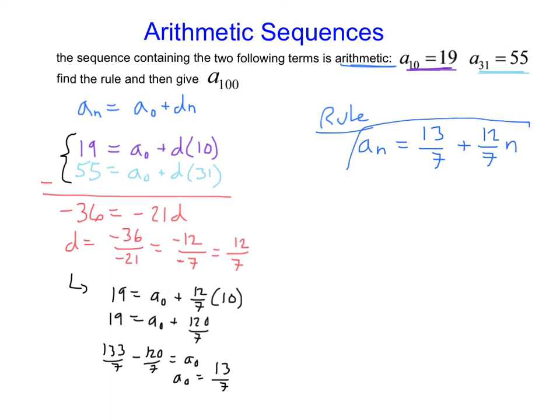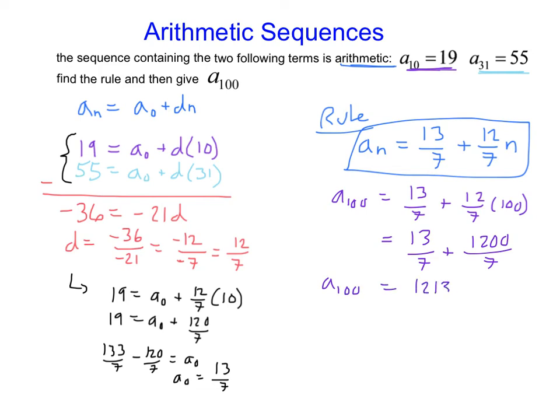Okay, so 13 sevenths, plus, this one's really big. Holy moly. So, a sub 100 is 1213 sevenths. And I'm pretty sure that's not going to reduce. Yep, it didn't. It was 173 and two sevenths. So, either one of those answers is fine there.